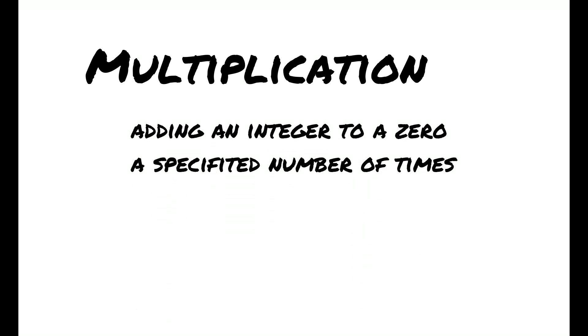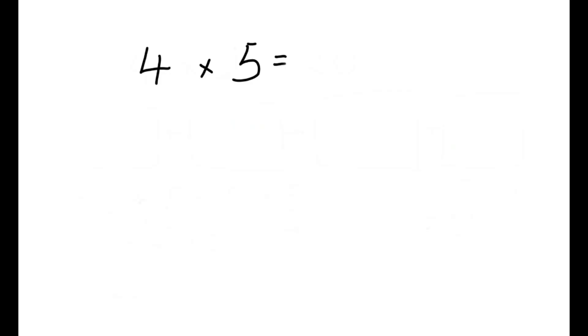Now you should be familiar with multiplication. It's time to get rid of the boxes and circles and do exactly according to the definition: adding an integer to 0 a specified number of times. 4 times 5 means adding 4, 5 times to 0, so there are five 4s, and sum them up.